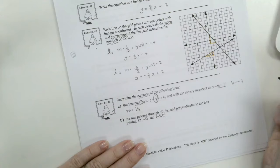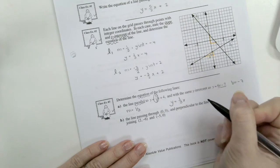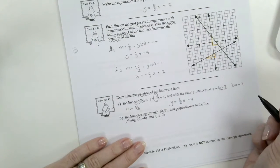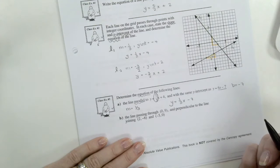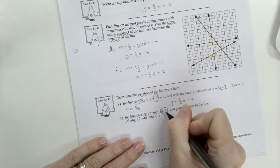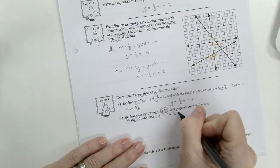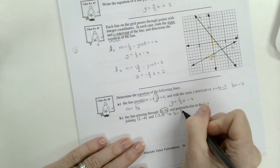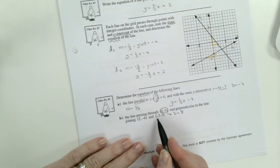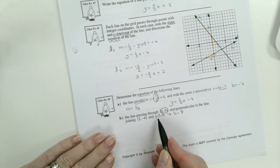Now we write y equals 1 third x minus 7. B part. The line passing through 0 and 9. So that's our y-intercept. So b equals 9.